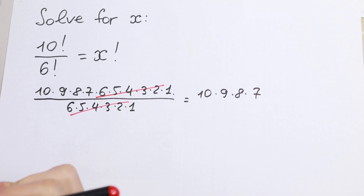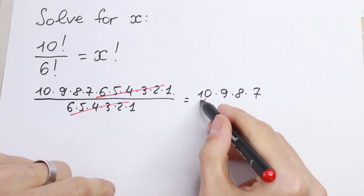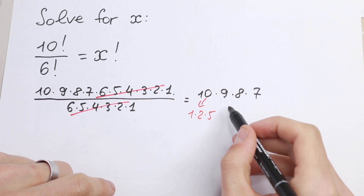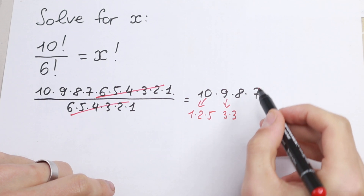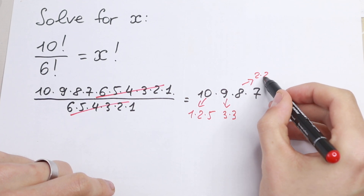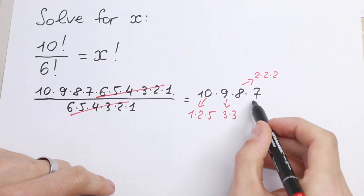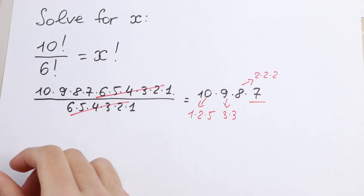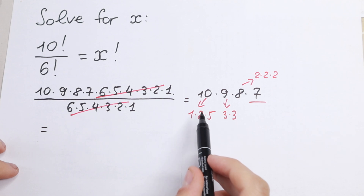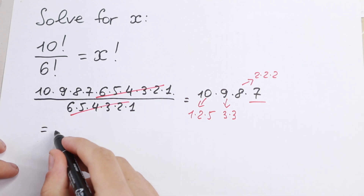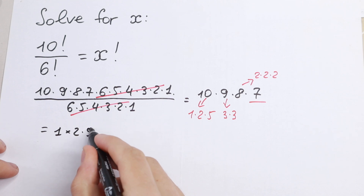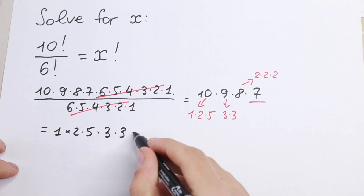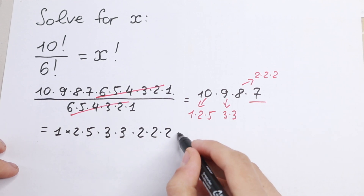I suggest we simplify this a little bit. Let's factor each number. 10 can be written as 1 times 2 times 5. This 9 can be written as 3 times 3. This 8 can be written as 2 times 2 times 2. And 7 stays as is, because it's a prime number. So let's write all of these elements in natural order: 1 times 2 times 5 times 3 times 3 times 2 times 2 times 2 times 7.